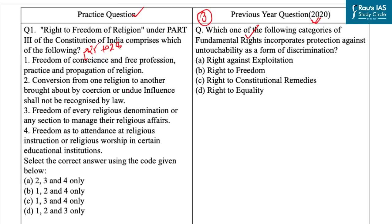The second statement is: conversion from one religion to another brought about by coercion or undue influence shall not be recognized by law. This statement is incorrect, because this was discussed in the Constituent Assembly to be included under the chapter on fundamental rights but was ultimately not included. So this is not part of the right to freedom of religion.